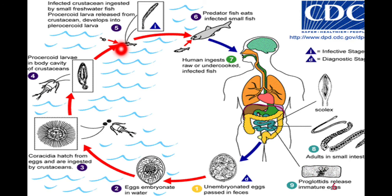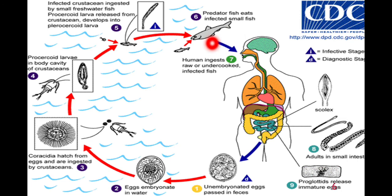Inside the body of the fish, the larvae mature into plerocercoid larvae, which is the infective stage for human beings. These small fish may be eaten directly by humans in undercooked or raw form, or these small fish are eaten by large fresh water fish such as perch or trout. When predator fish eat the infected small fish, the larvae penetrate into the muscles of the predator fish.